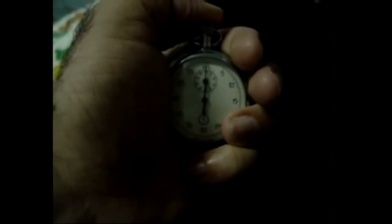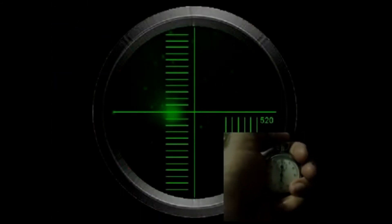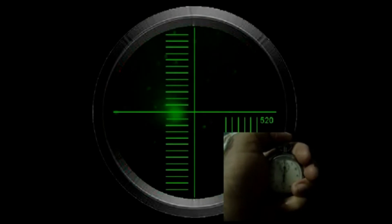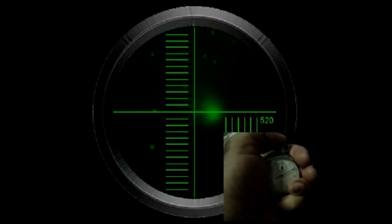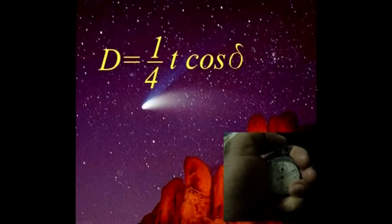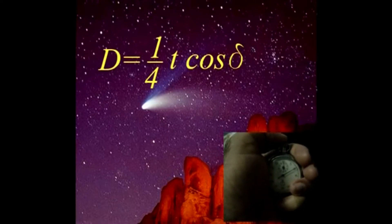Para emplear el método del cronometraje, detenemos el mecanismo de relojería del telescopio, dejando que el cometa se desplace sobre el campo del mismo. En el momento exacto en que la coma comience a transitar por delante del retículo, accionamos el cronómetro, y en el justo momento en que la coma termine de pasar a través de este retículo, detenemos el cronómetro. Este tiempo, según la ecuación dada, permitirá calcular el diámetro de esta coma. El parámetro delta representa la declinación del cometa.